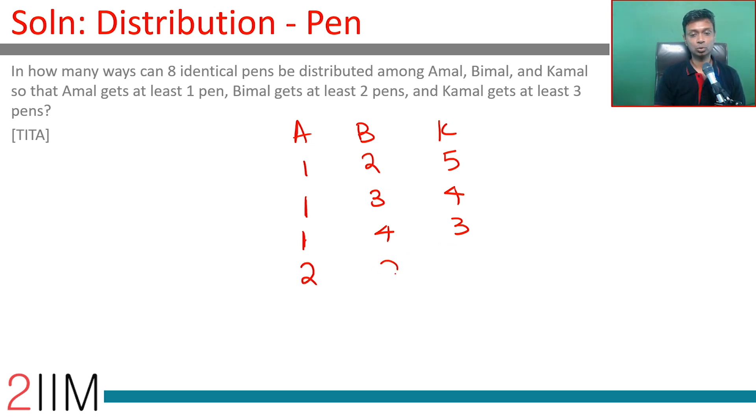Put 2 for Amal, 2 for Bimal, 4 for Kamal. Or 2, 3, 3. We cannot have 2, 4, 2.